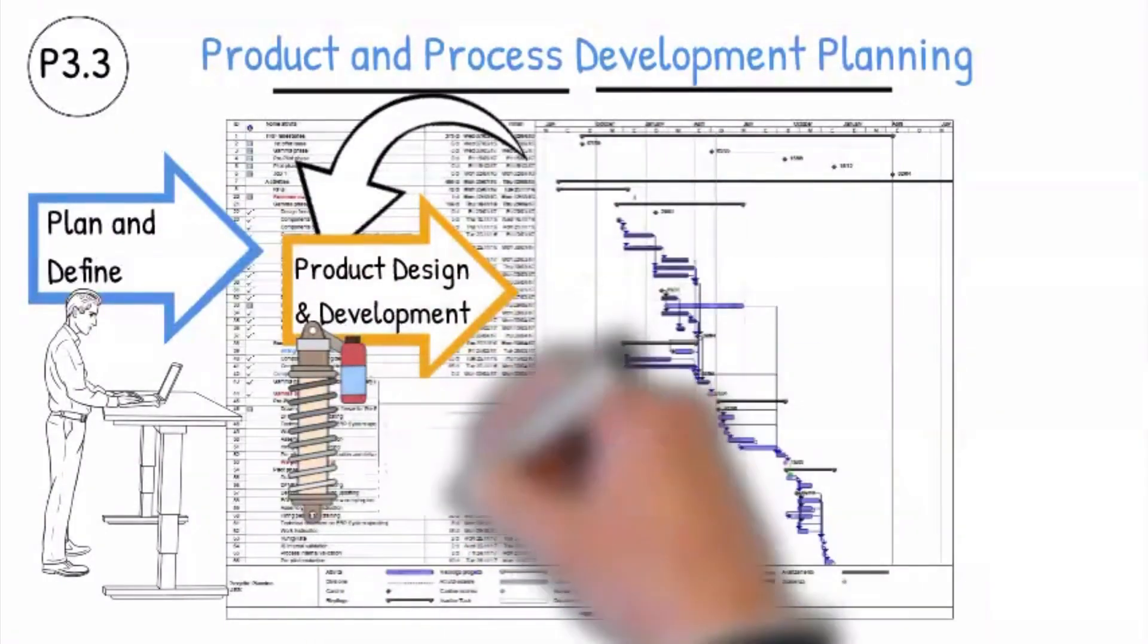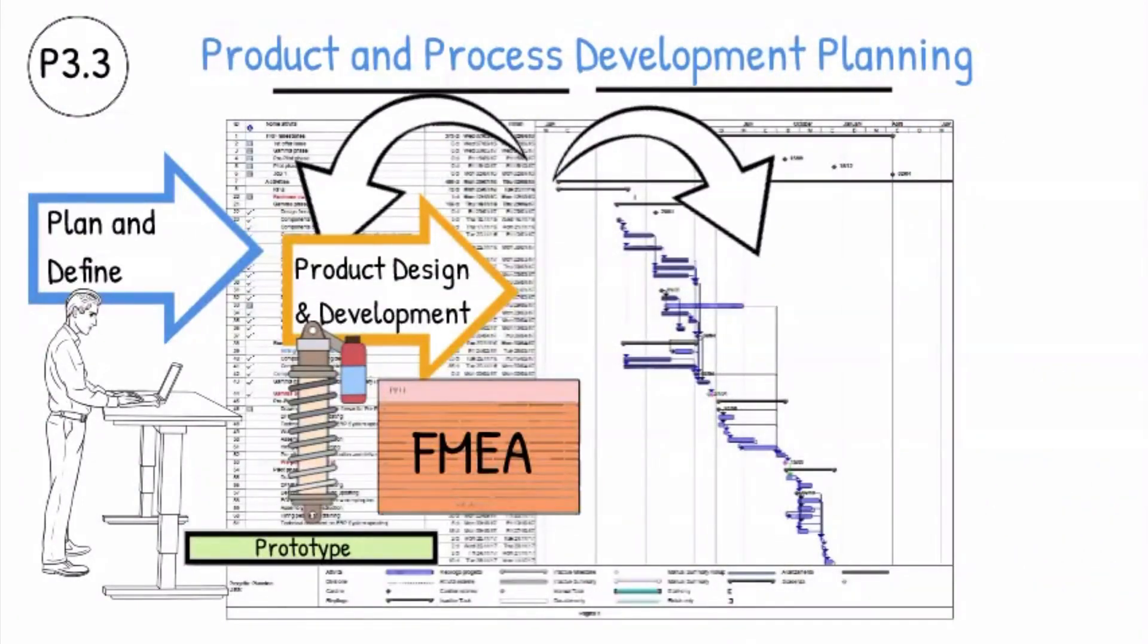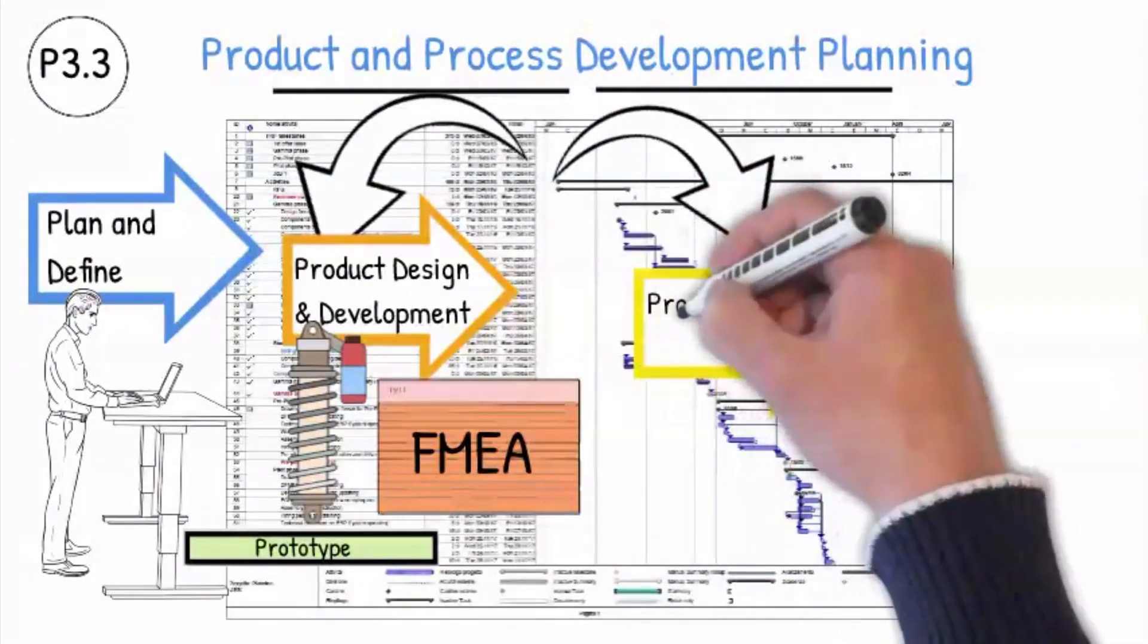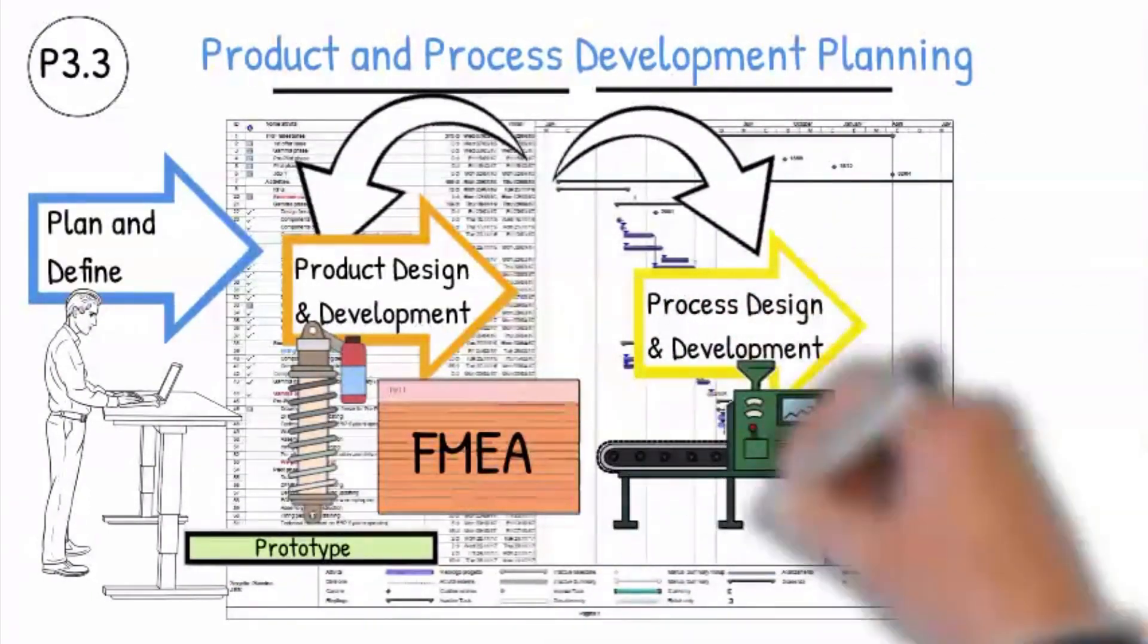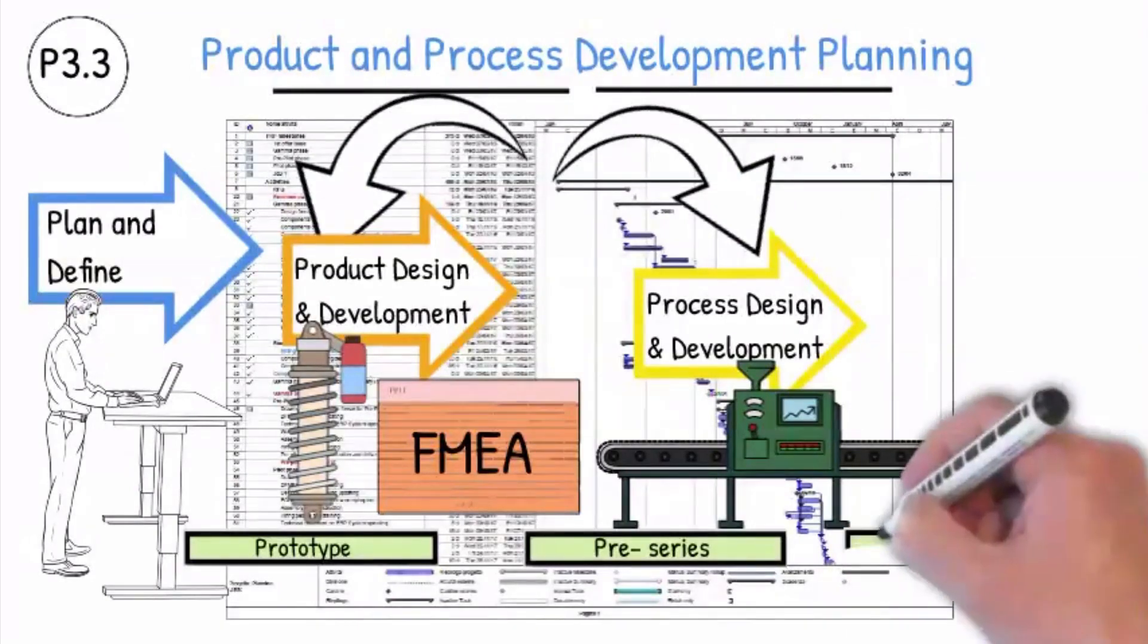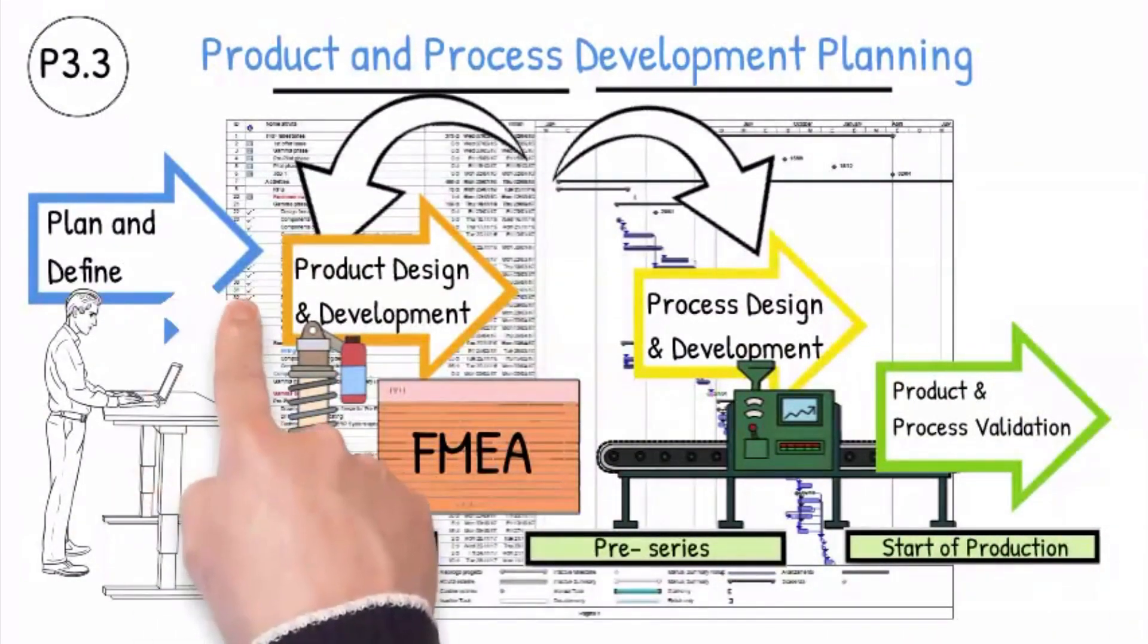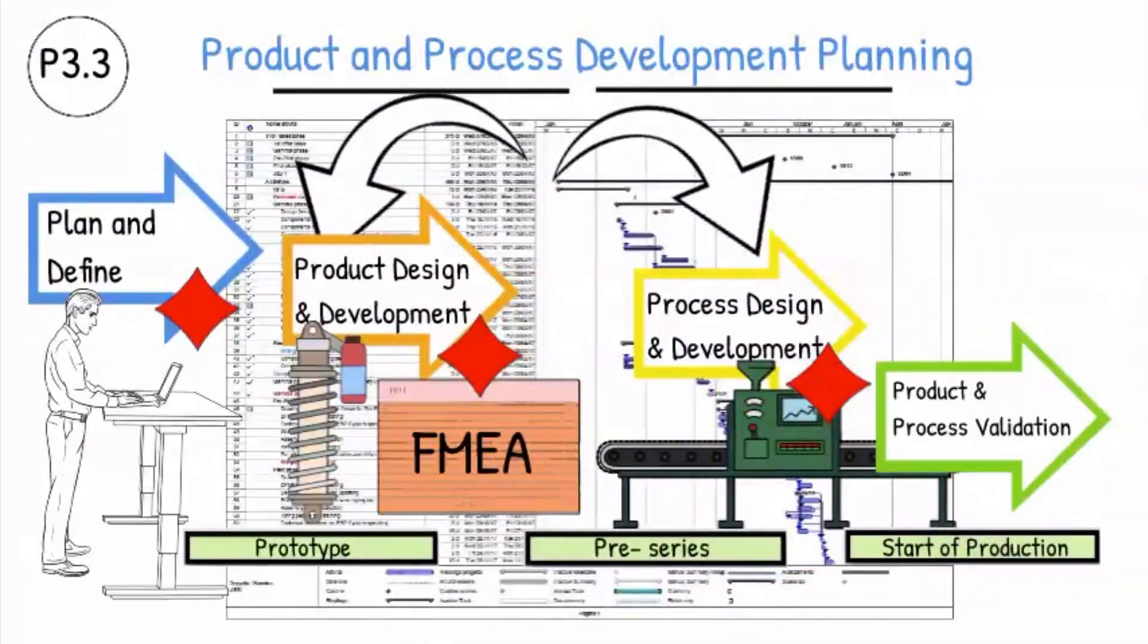Risk analysis, product FMEA and process FMEA or similar methods are part of the planning. At the planning stage, the development of new products and processes should take into account the requirements of the product operational conditions. The time schedules contain all information for product and process development including deadlines and length of time, milestones within the overall project plan, performance testing.